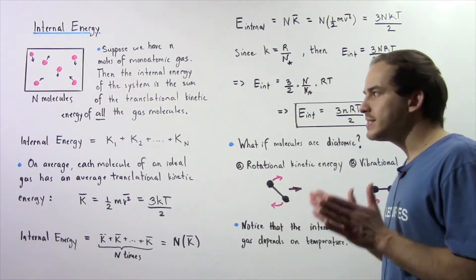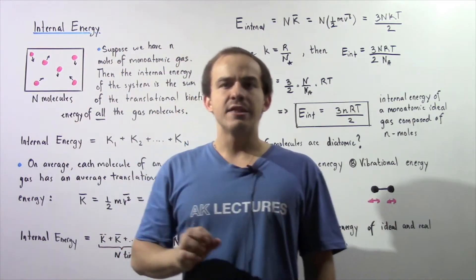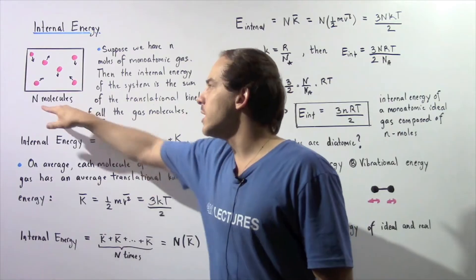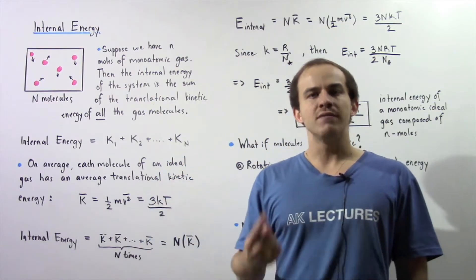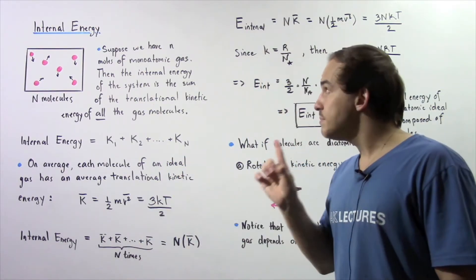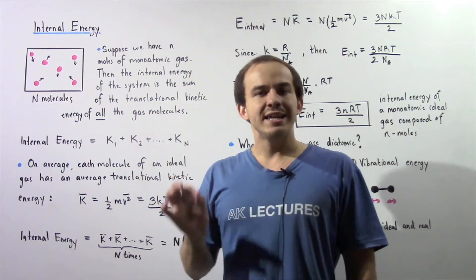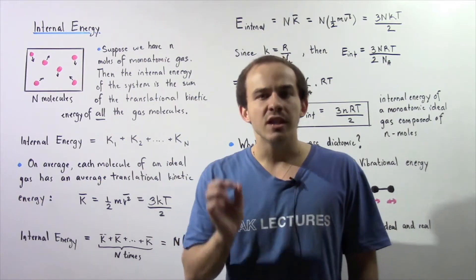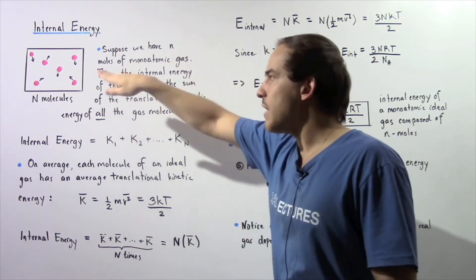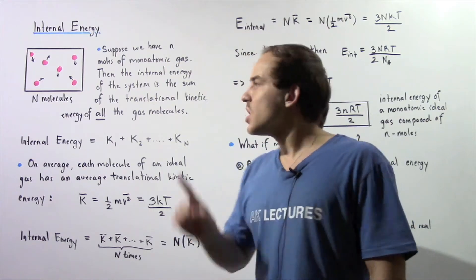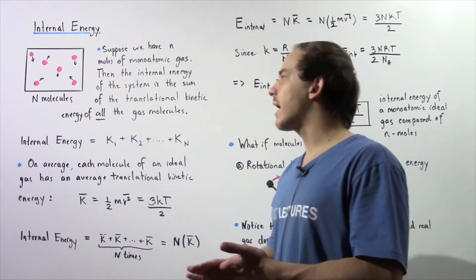Let's begin with the following simplified case. Let's say that we have a closed container, and inside this closed container we have N number of molecules where each molecule is a monatomic molecule, meaning it is composed of a single atom. Because we're dealing with monatomic ideal gas molecules, that implies that each molecule only has translational kinetic energies. So the internal energy of our system is equal to the sum of all the translational kinetic energies of all the molecules found in our system.